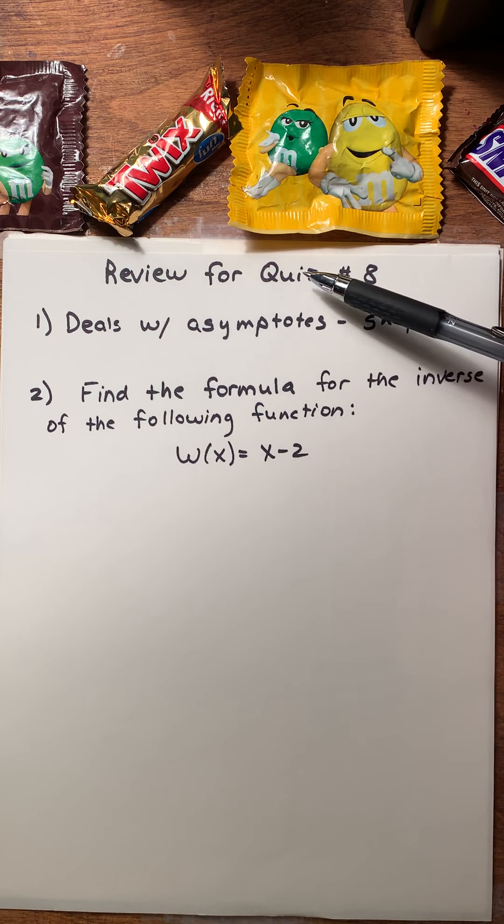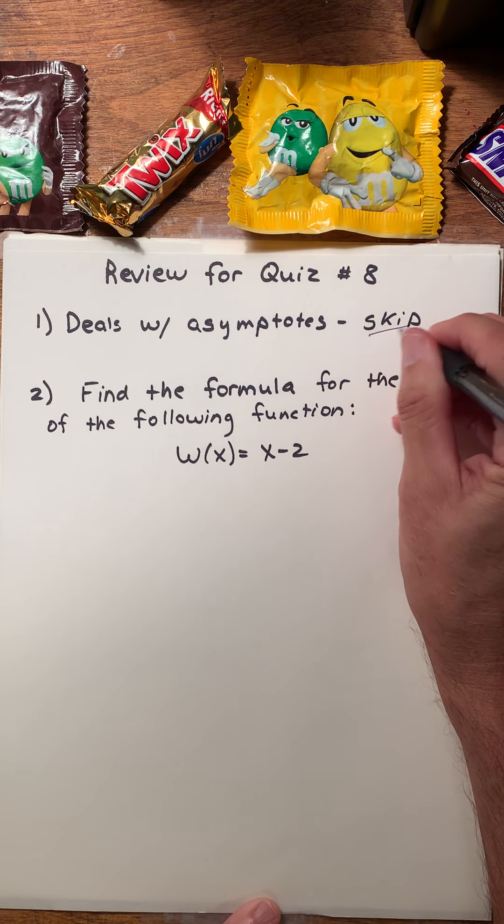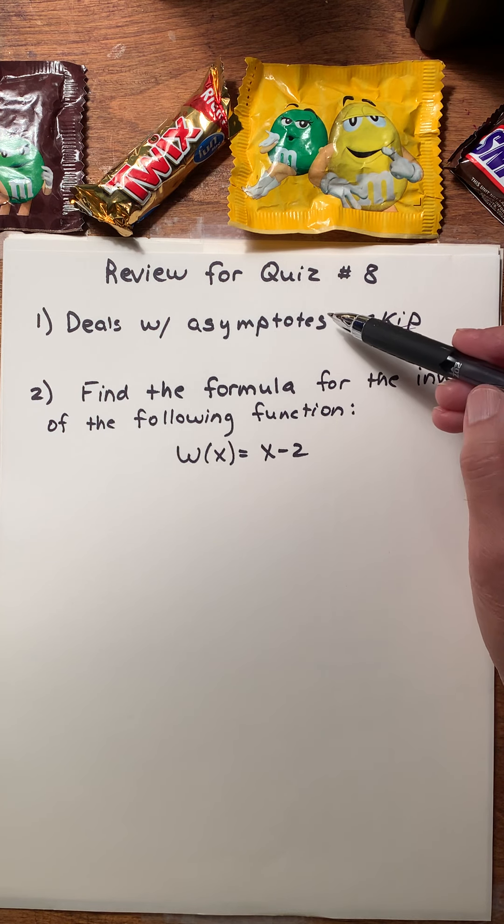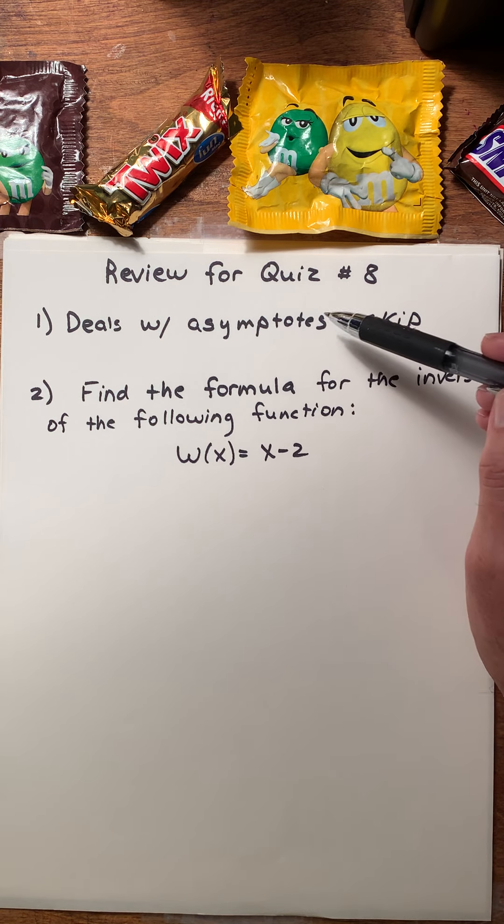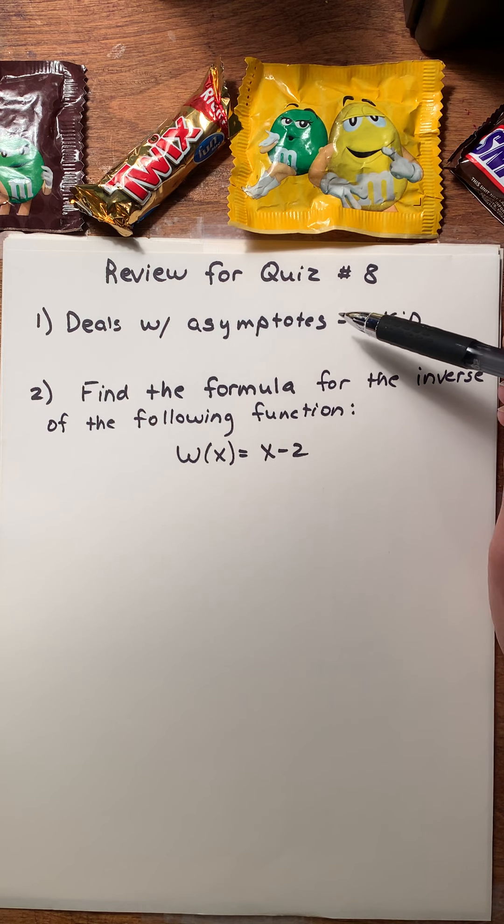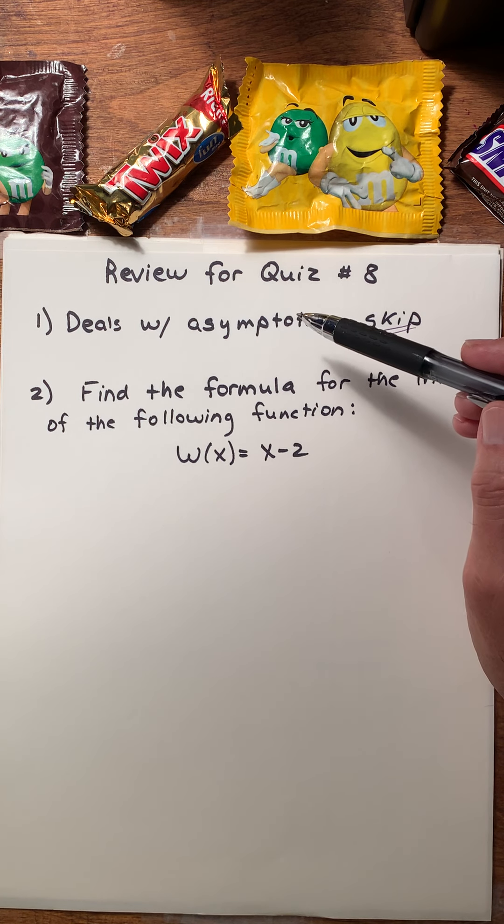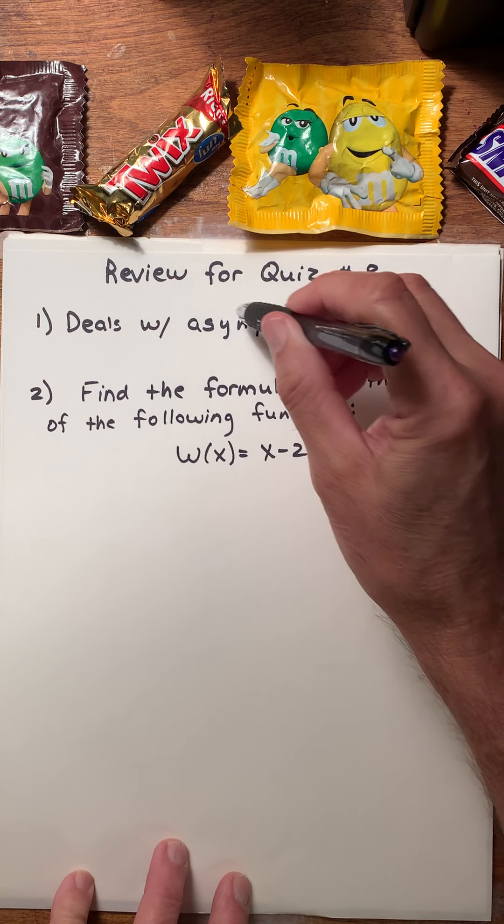Number one, question number one on your quiz will deal with asymptotes. And you may recall that this is, I think, section 6-1, something like that. But those of you who are in my class, we are not going to be concerned with asymptotes. So you may simply skip this problem. It will look like you have a lower grade when you finish a course because you have not answered this question, but this will not be counted against you.